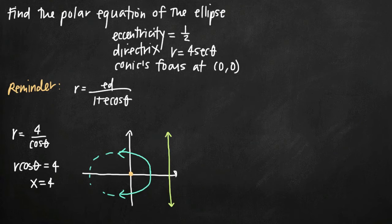For an ellipse with this orientation, the equation is r = ed/(1 + e cos(θ)), where e is the eccentricity and d is the directrix value.